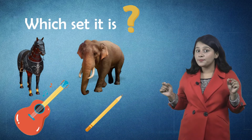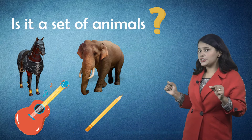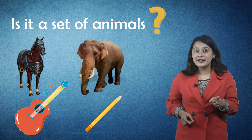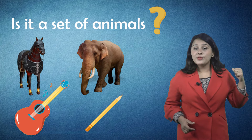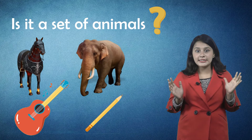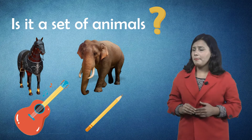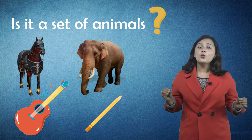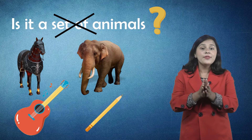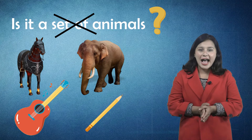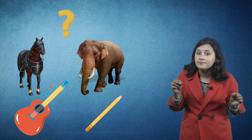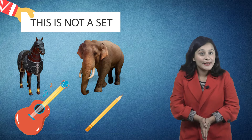Now tell me, which set is it? Is it a set of animals? You may say yes, because in this group there is an elephant and a horse. But guitar and pencil are not animals, so we cannot say that this is a set of animals.